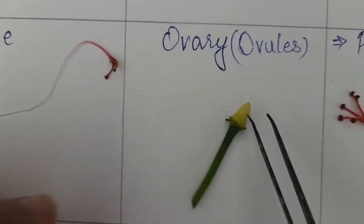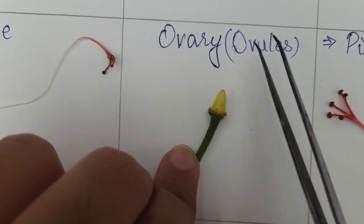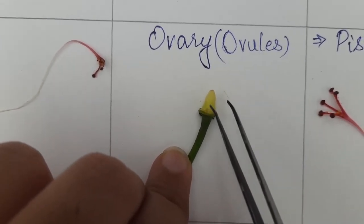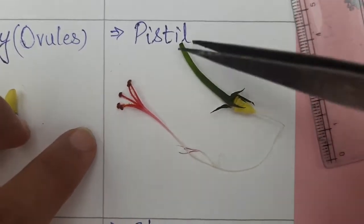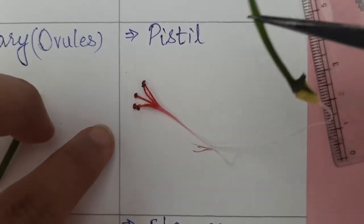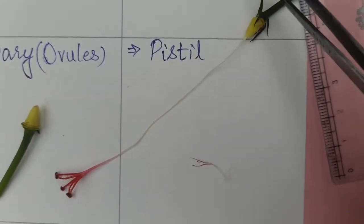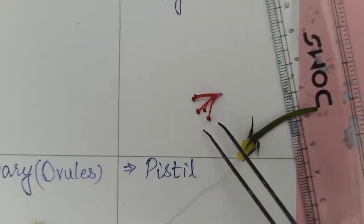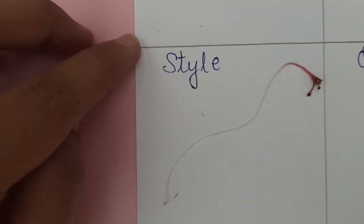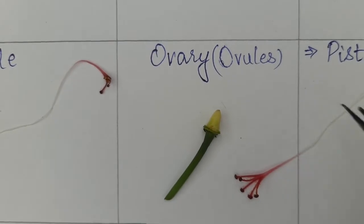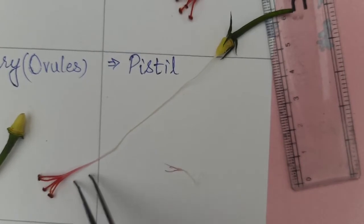Here is the ovary. You can see this bulged part is the ovary, and ovules are present inside the ovary which we will see shortly. Here is the pistil. So here you can see — we just saw stigma, we saw style, and we also saw the ovary. When all these three parts are put together they form the pistil, or the female reproductive part of a plant.